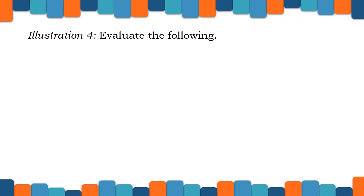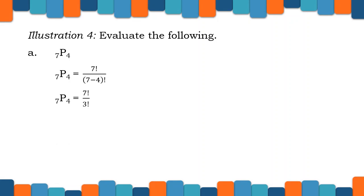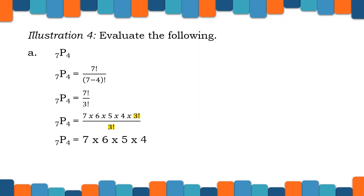Let us have illustration 4. Evaluate the following. A: 7P4. We have 7 factorial all over the quantity (7 minus 4) factorial, and 7 factorial all over 3 factorial. We need to expand 7 factorial from our numerator: 7 times 6 times 5 times 4 times 3 factorial, all over 3 factorial. The 3 factorials cancel out, so we have 7 times 6 times 5 times 4, and our final answer will be 840.